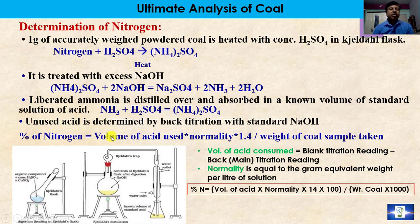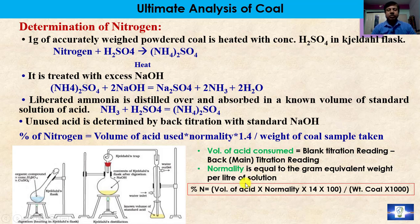The volume of acid consumed = blank titration reading minus back (main) titration reading. Blank titration reading means the acid is titrated before the ammonia enters the acid. Normality = gram equivalent weight per litre of solution. Since the volume of acid consumed is in millilitres, it is converted to litres by dividing by 1000. So the percentage of nitrogen = (volume of acid × normality × 14 × 100) / (weight of coal × 1000), which simplifies to: (volume of acid used × normality × 1.4) / weight of coal sample taken.